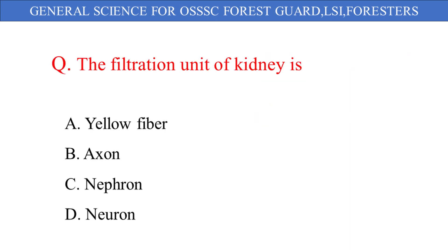The filtration unit of kidneys: A. Yellow fiber, B. Axon, C. Nephron, D. Neuron. And the correct answer is option C: Nephron.